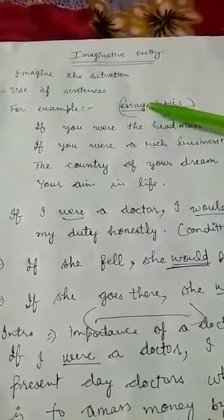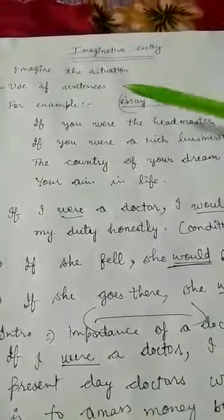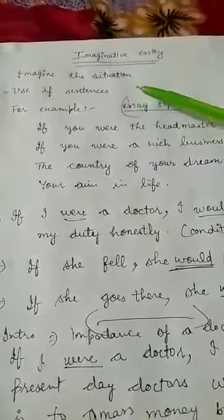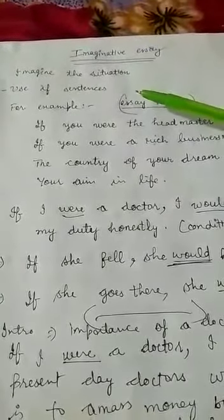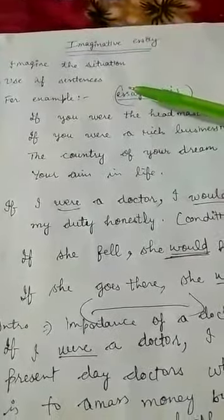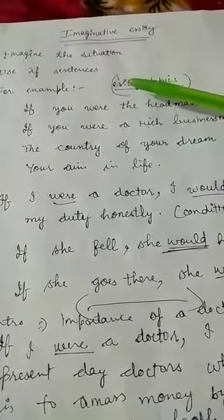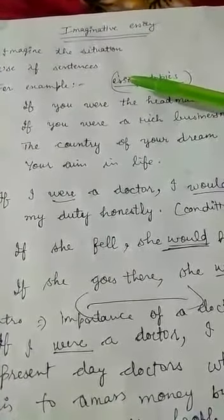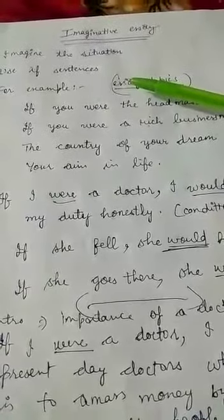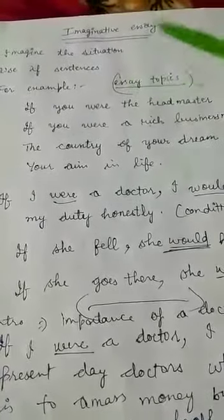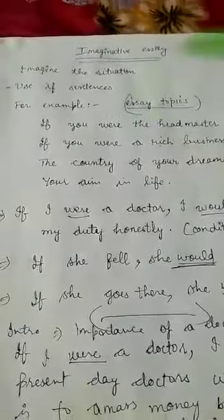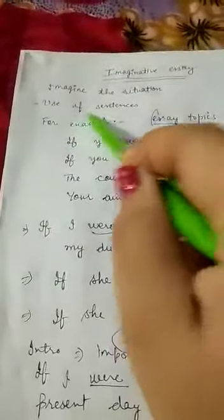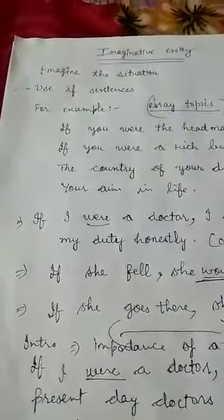The first factor we need to be cautious about is imagining the situation. We will have to imagine a situation that has not taken place, but it can take place in the coming future. Use if sentences — conditional sentences. We have already done conditional sentences; you will make use of them.